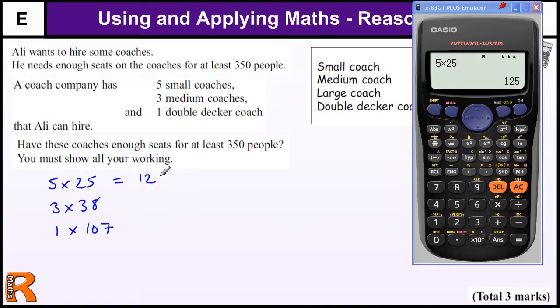show our work, so it's probably worth writing these things down. 3 times 38 equals 114, and 1 times 107, so don't need to calculate that. If we add all that up, we've got 114 plus 125 plus 107.